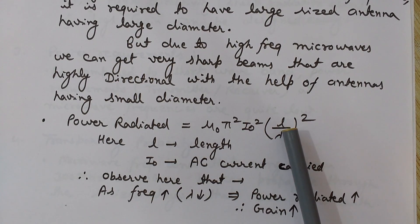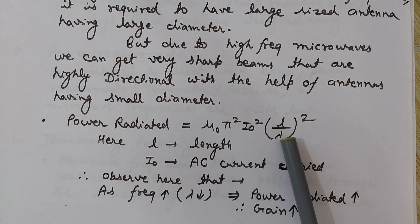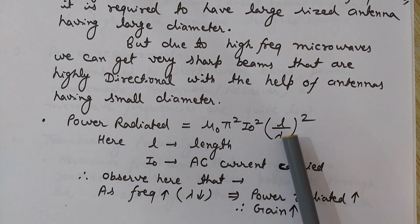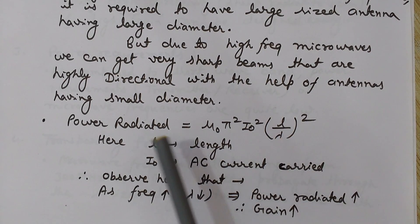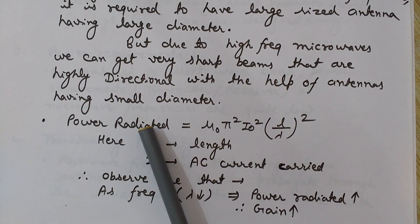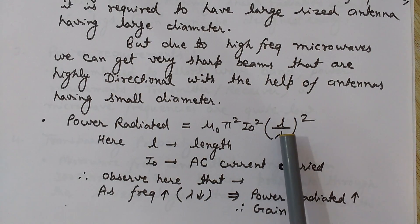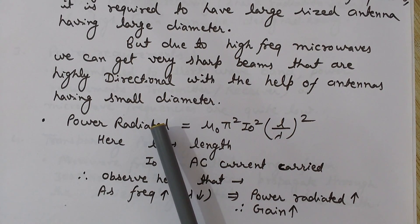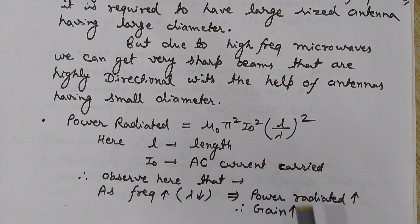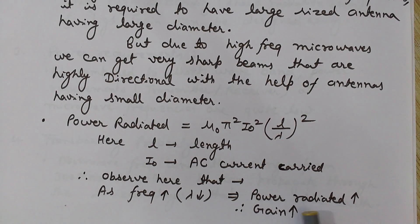On decreasing wavelength — since wavelength is low and frequency is high in the case of microwaves — as the wavelength is low, the power radiated is high. Wavelength is low because frequency is high for microwaves, so the power radiated is high.